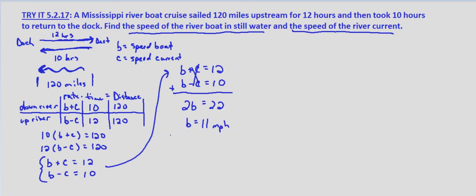Now we'll substitute this into either of our equations. I'm going to use both to solve for the other. So b plus c equals 12. So 11 plus c equals 12. Subtract 11 from both sides and we get c equals 1 mile per hour. B minus c equals 10. So 11 minus c equals 10. Subtract 11 from both sides we get negative c equals negative 1. Divide both sides by negative 1 and we get c equals 1 mile per hour.